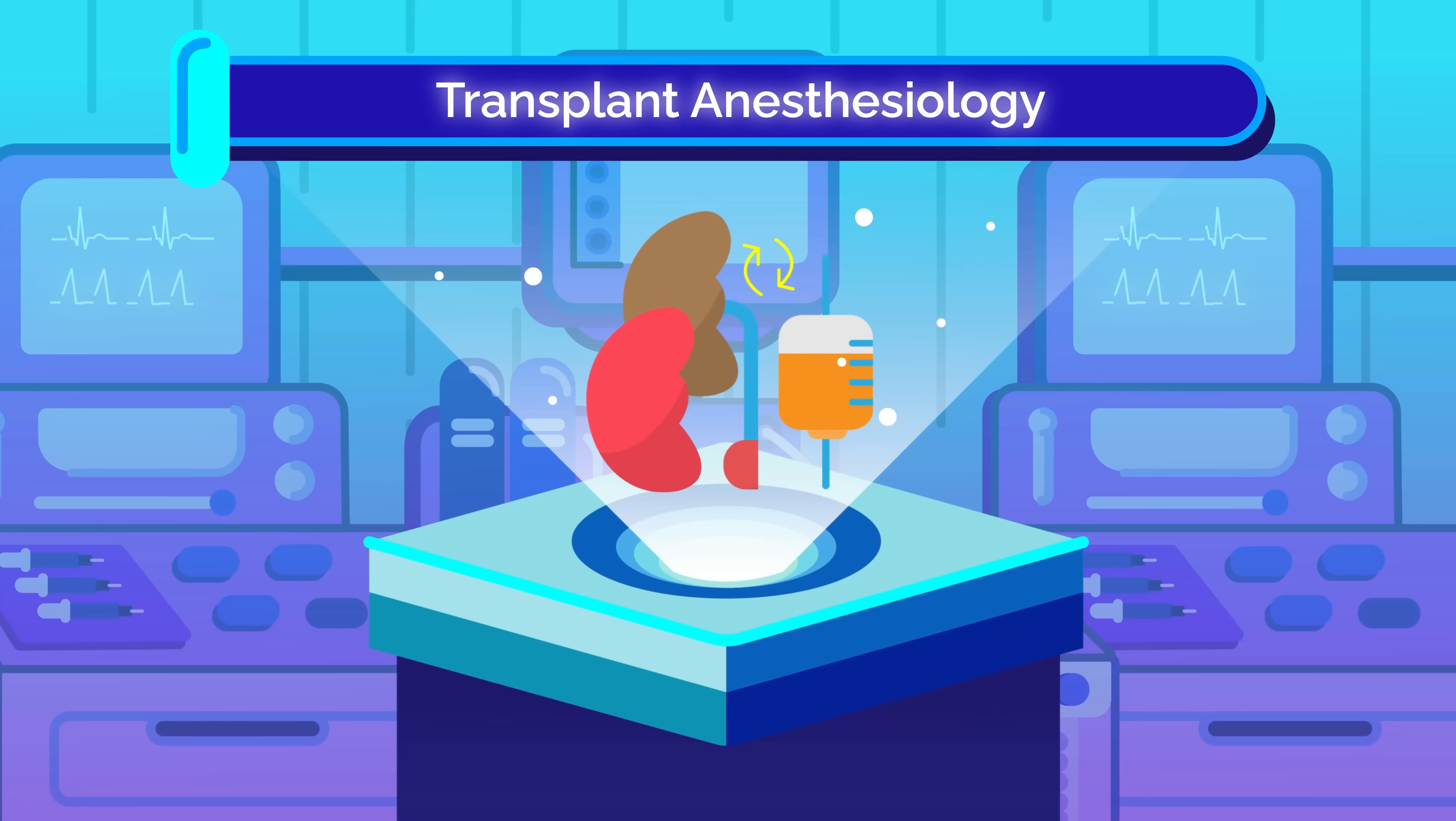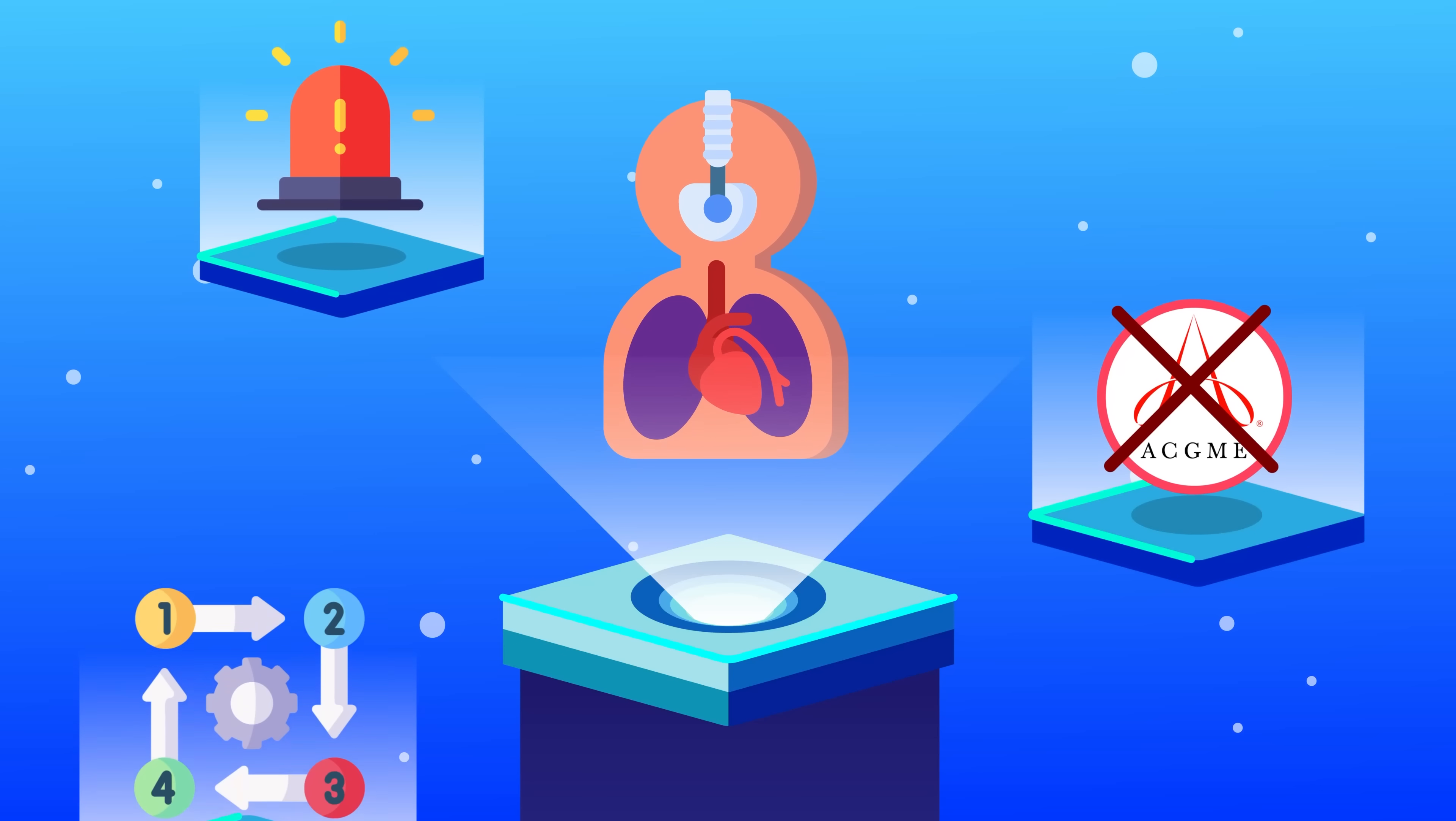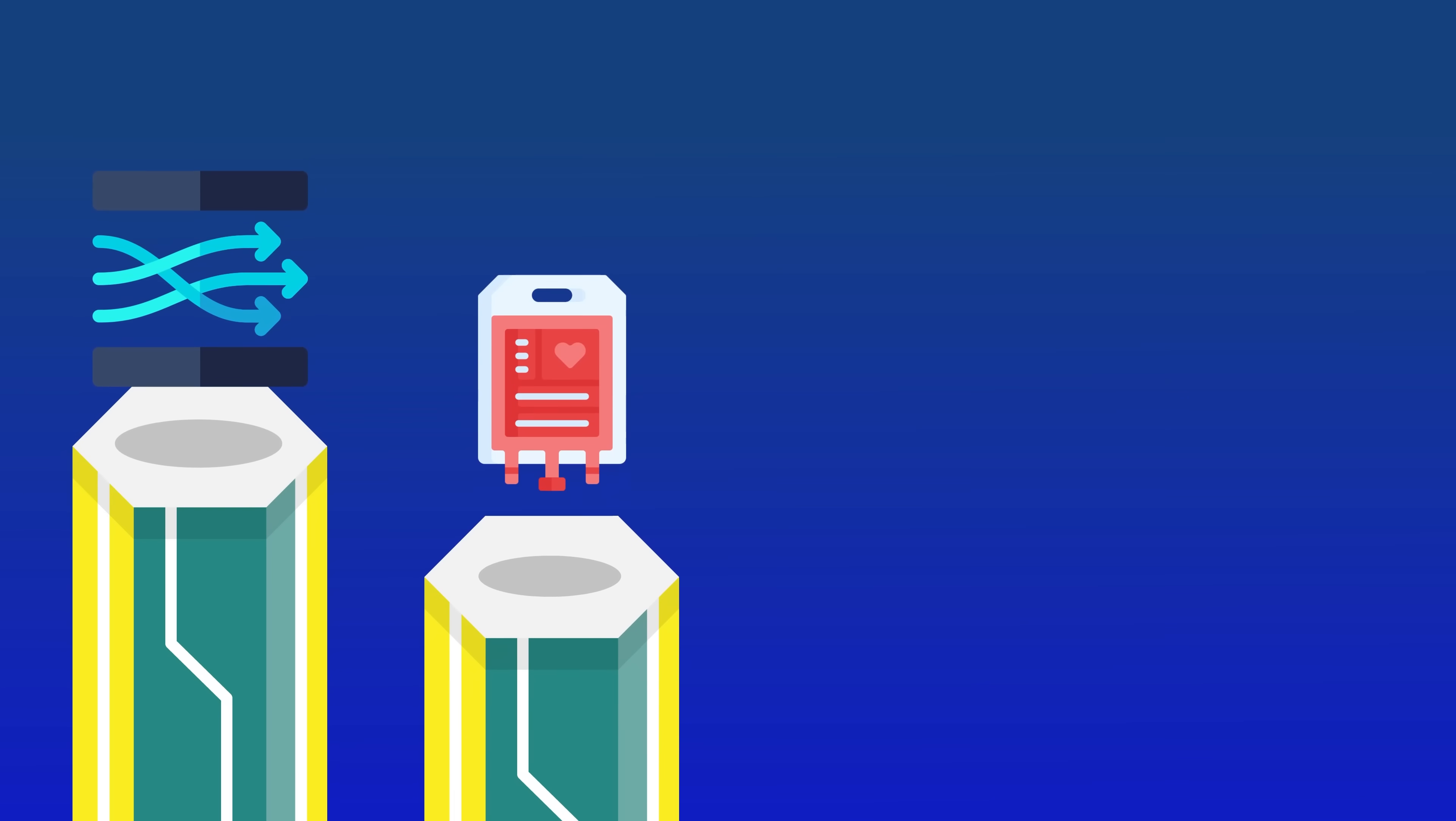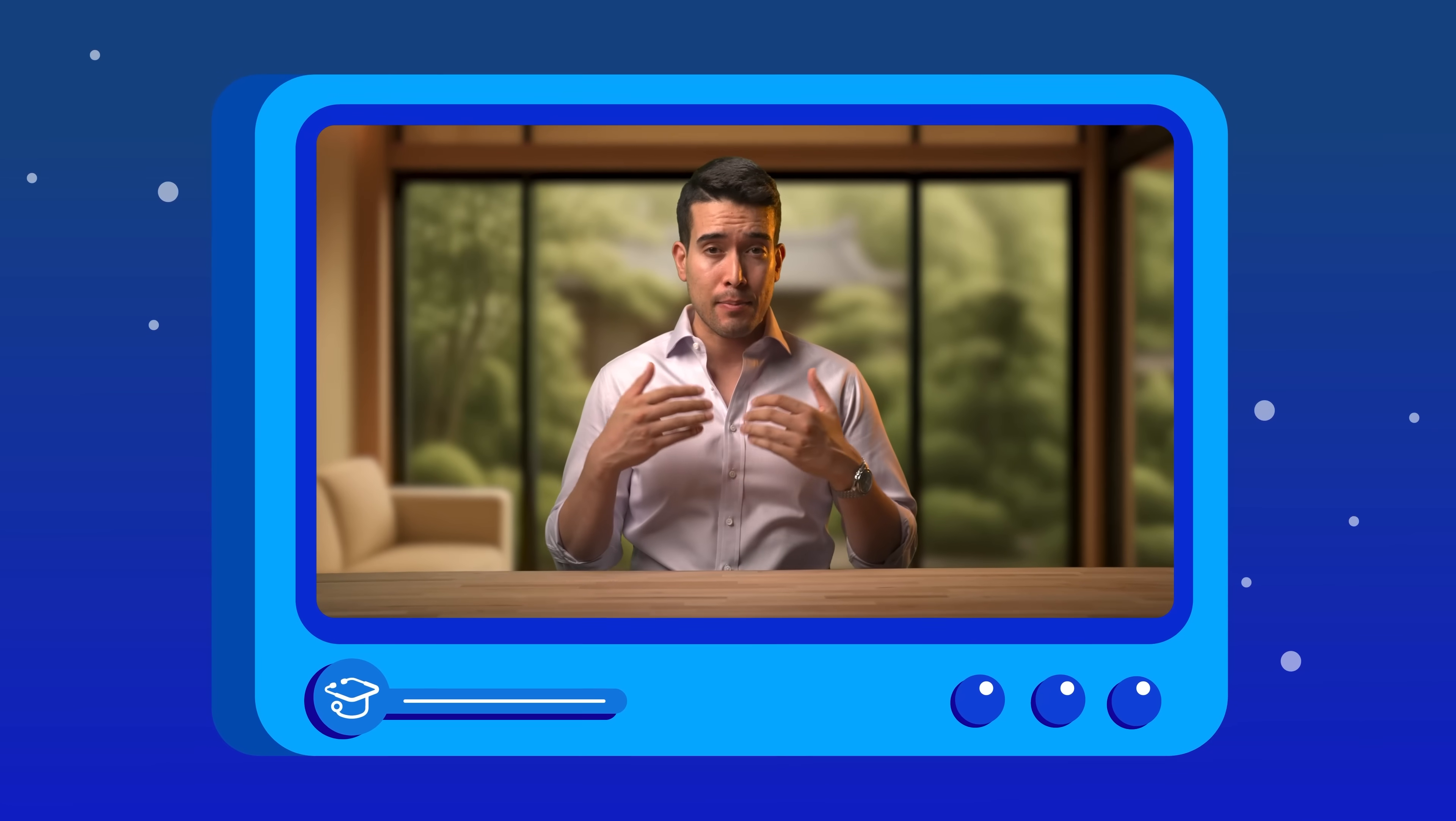And last but not least, transplant anesthesiology. These specialists are called in for some of the most complex high-stake surgeries like liver, kidney, heart, and lung transplants. This non-ACGME fellowship is focused on high acuity and deeply procedural anesthesia. A day as a transplant anesthesiologist could begin at 2am when a donor organ suddenly becomes available. You arrive at the OR with short notice where you immediately begin managing massive fluid shifts, blood products, coagulopathies, and sometimes cardiac bypass. To see the other side what a transplant surgeon is doing, check out my first ever day in the life episode where I show you a call night while I was rotating on transplant surgery in residency and got to perform a kidney transplant. Link in the description.